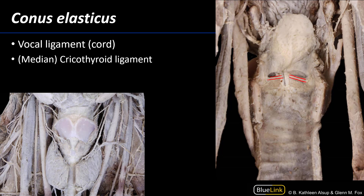These vocal ligaments have the thyroaretenoid muscle and vocalis muscle associated with them. When that entirety of those structures is invested by mucosa, we refer to it as the vocal cords — these are the structures that vibrate during phonation. As you're listening to my voice, my very own vocal folds are vibrating.